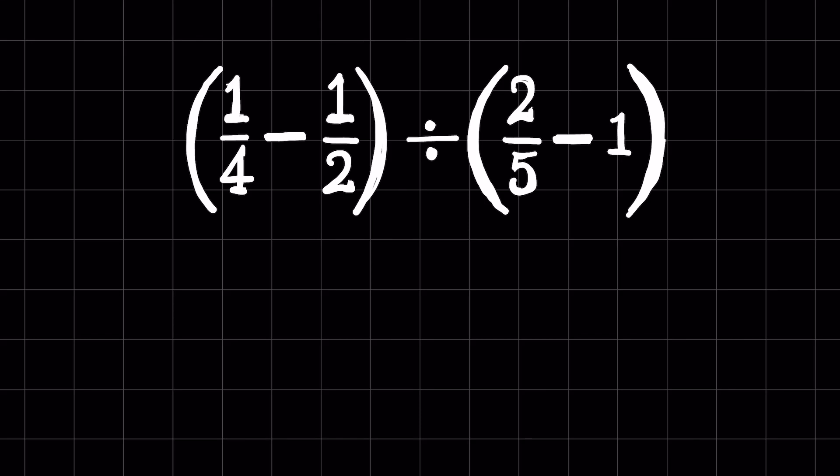1 upon 4 minus 1 upon 2 inside parenthesis divided by 2 upon 5 minus 1 inside parenthesis. How to solve this? As per order of operations, we first solve parenthesis. Here we have two parentheses, and both are smaller bracket parentheses.